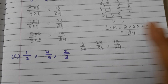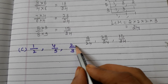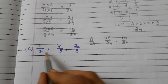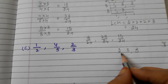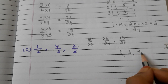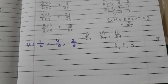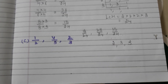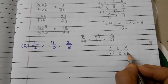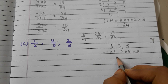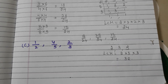Let us go to the last example: 1 by 2, 4 by 5, and 2 by 3. Take the denominators: 2, 5, and 3. Here there is no common factor except 1, so directly we can multiply. LCM equals 2 into 5 into 3. 2 fives are 10, 10 threes are 30. Now LCM is 30.